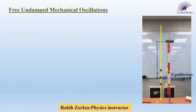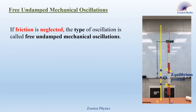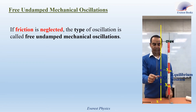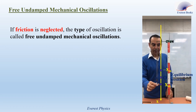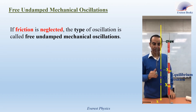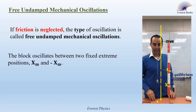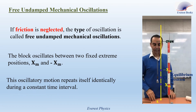Now, free undamped mechanical oscillations. The free mechanical oscillation is said to be undamped if friction is neglected; this type is called free undamped mechanical oscillations. Let's watch this short experiment, where a block oscillates with no friction. Shift the block from its equilibrium position by a distance XM and release the block from rest. We observe that it oscillates between two extreme positions, plus XM and minus XM. This oscillatory motion repeats itself identically during a constant time interval.